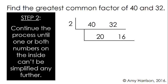We need to continue this process until one or both of the numbers on the inside cannot be simplified any further. 20 and 16 are both divisible by 2, so if we divide 20 divided by 2, we get 10, and 16 divided by 2, we get 8. We can keep going.